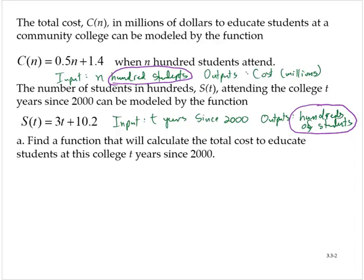Part A asks us to find a function that will calculate the total cost to educate students at this college t years since 2000. We want the total cost C to educate students at this college t years since 2000. We want C of t.